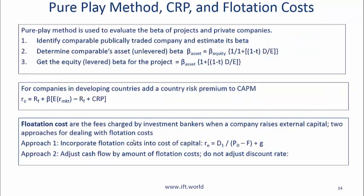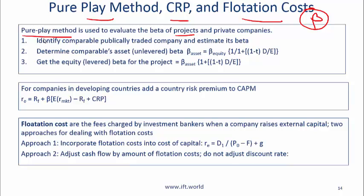Next, some additional items that are peripheral but still good to know. If you want to estimate the required return for a private company, a division, or a large project, the beta is not easily known. To use CAPM you need the beta of that project. The method used here is called the pure play method — remember this name, as some exam questions may just require you to identify it.